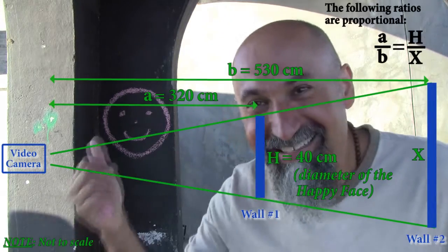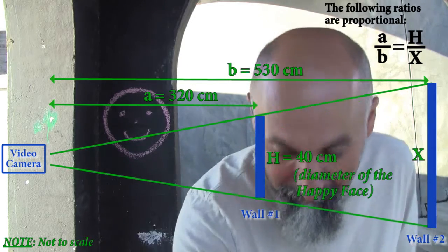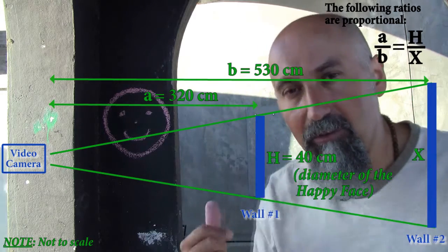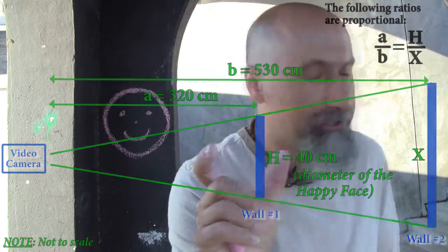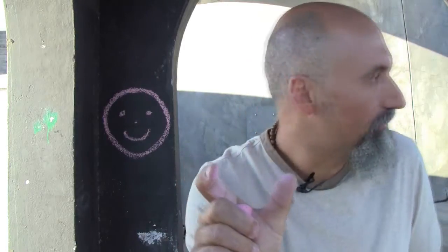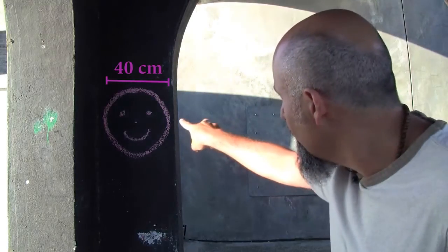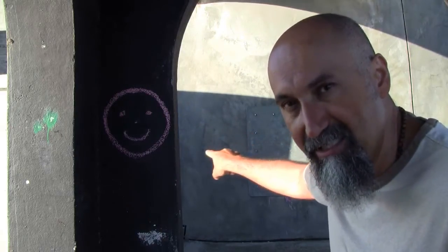The diameter of the near circle is 40 centimeters, so the radius is 20 centimeters. The distance from the lens to the first wall was 320 centimeters, and to the back wall was 530 centimeters. That's going to be our conversion ratio — the fraction we're going to use. We set it up as a fraction that has to be proportional to the diameter of the near circle versus the diameter of the back wall circle. That's the unknown.